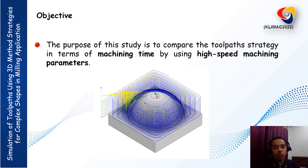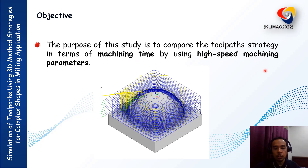The objective of the study is to compare the toolpath strategies in terms of machining time by using high-speed machining parameters. This is an example of toolpath movement generated from the CAD/CAM system.